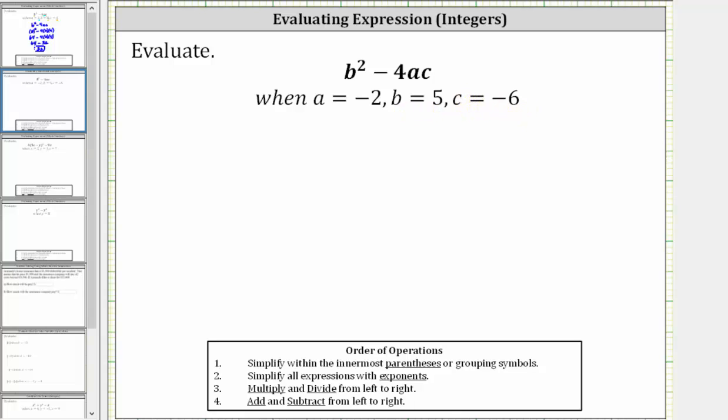To do this, we begin by substituting negative two for a, positive five for b, negative six for c, and then we evaluate the expression following the order of operations. So beginning with the original expression, b squared minus 4ac, let's perform the substitution.